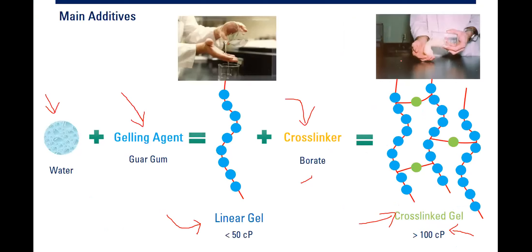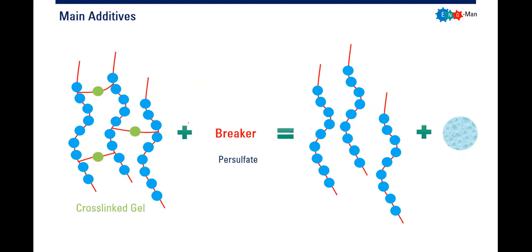We want the gel to break and be lost into the reservoir after the hydraulic fracturing is complete. After the proppant is placed where we want it, we want the gel to flow into the reservoir. To ensure this, we need to break the cross-link polymer using a breaker — most breakers use persulfate. The breaker works some minutes to one hour after completion. The cross-link gel is broken into linear gel with low viscosity and water, allowing it to flow into the reservoir without damaging or blocking the hydraulic fractures.